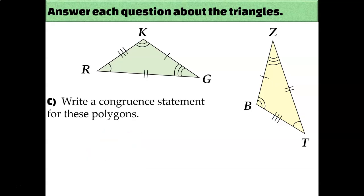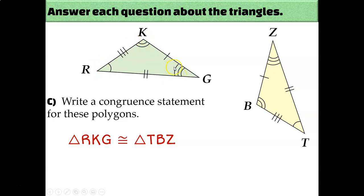When you name a triangle, you can write the three letters from the triangle's vertices in whatever order you want. So if you wanted to call the first triangle, the green one, triangle RKG, that's totally fine. But whatever you decide to name the first triangle, you have to name the second triangle in a corresponding order. So if I decide to call the first triangle triangle RKG, I have to call the second triangle triangle TBZ. R had one congruence mark, K has two congruence marks, and G has three congruence marks — so I went in order of the congruence marks. And I have to put the letters in the same order for the second triangle: one, two, three congruence marks — triangle TBZ.